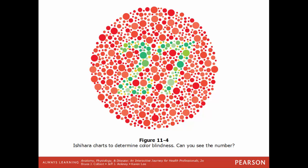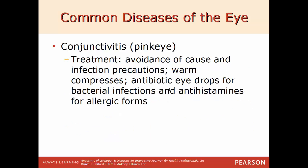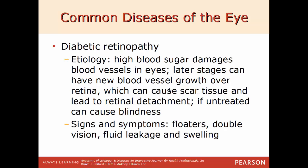In the Ishihara chart example, people who are not color blind should see the number 27 — the two and the seven embedded in green. Conjunctivitis or pink eye: inflammation of the conjunctiva caused by bacteria, virus, or allergies. Signs include pinkish color of the eye, discharge, itching, pain, and excessive eye watering. Diagnosed by eye exam, culture, and sensitivity test. Treatment includes avoiding the cause, warm compresses, eye drops, and antihistamines for the allergic form.